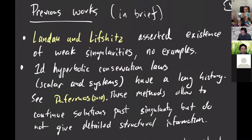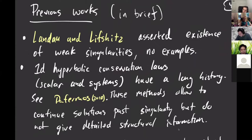Let me review some past work concerning the development problem — going from the initial pre-shock to a discontinuous shock wave. Landau and Lifshitz, in their book on fluid dynamics, discuss shock waves at length and mention the possibility of weak singularities emerging from non-smooth data — exactly what happens with the pre-shock forming a Hölder cusp at finite time from initially smooth data. They mention that such an event could trigger formation of weak singularities propagating along different speeds, but they don't give specific examples of their existence or structure.